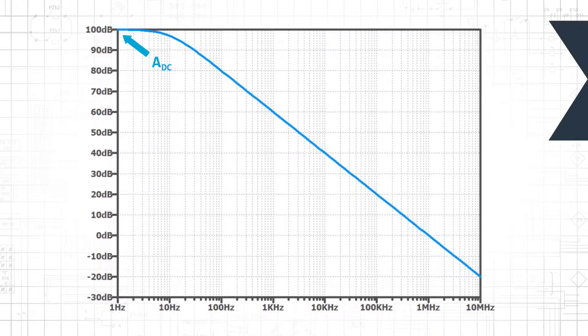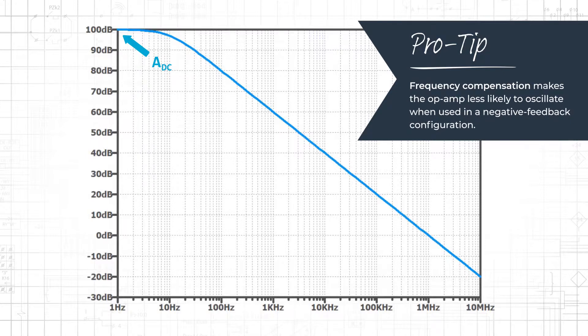Designers intentionally create this type of frequency response because it makes the op-amp less likely to oscillate when used in a negative feedback configuration. This technique is called frequency compensation, and op-amps designed this way are called internally compensated op-amps.